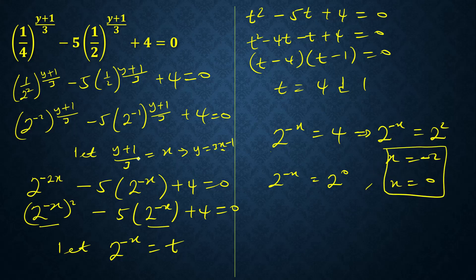We have y plus 1 over 3 equals x. So the first answer for x is minus 2, so y equals 3 times minus 2 minus 1, so y is minus 7.